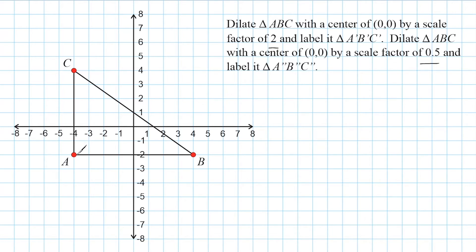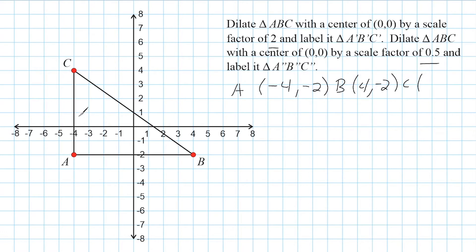Point A is located at negative four, negative two. Point B is located at positive four, negative two. And point C is currently located at negative four, positive four.